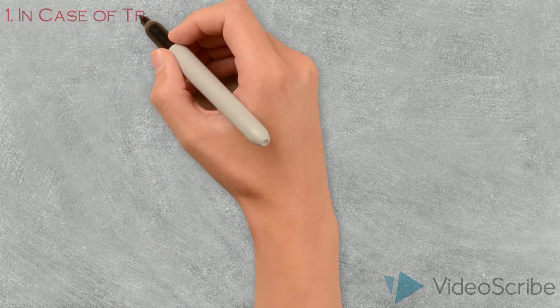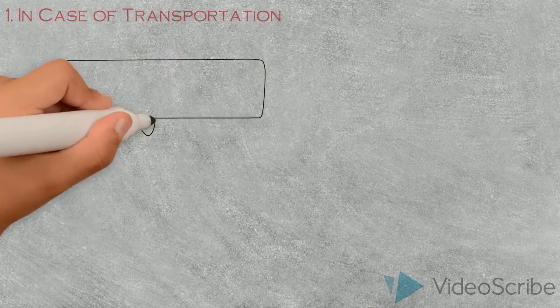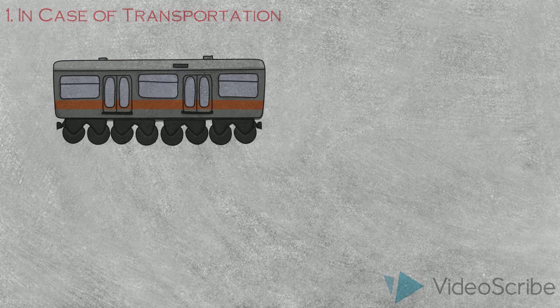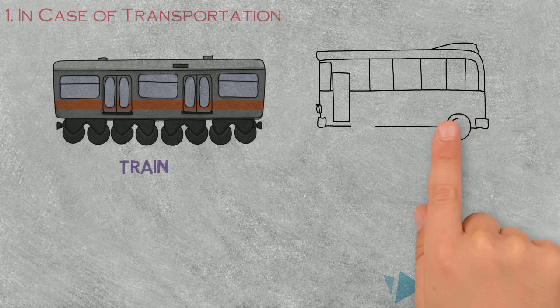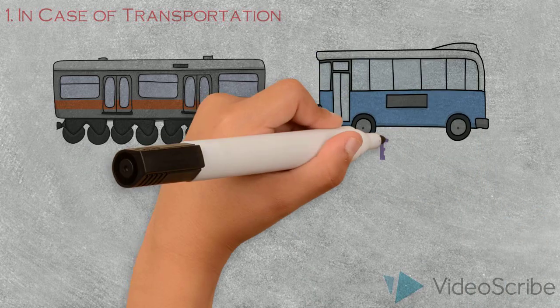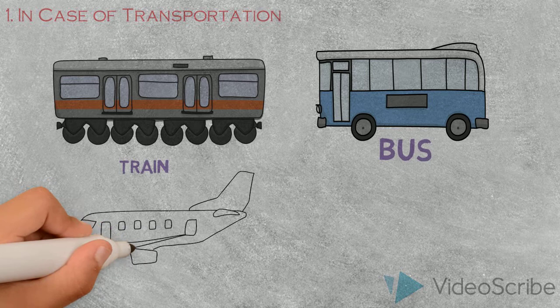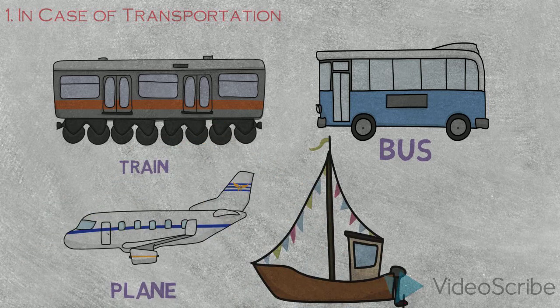Let's start with point number one — in case of transportation. First, let's talk about public transport, like train, bus, plane, and boat. These are all public transportation. Since more than one person sits in them, we use 'on' for public transport. Another reason is that a normal person doesn't purchase these — in rare cases some people own them, so those would be exceptions.